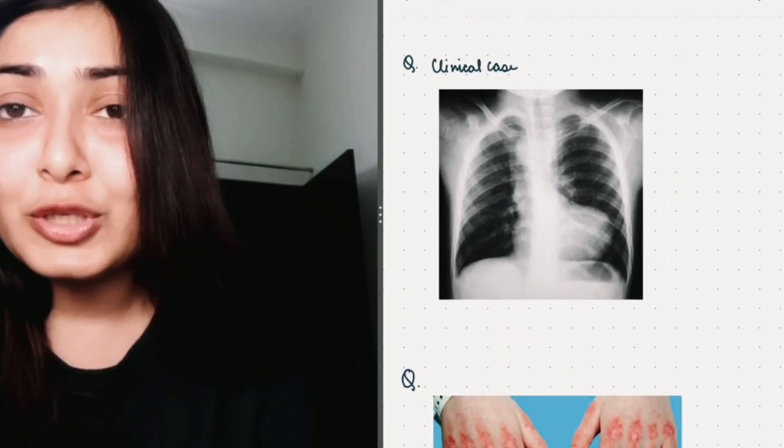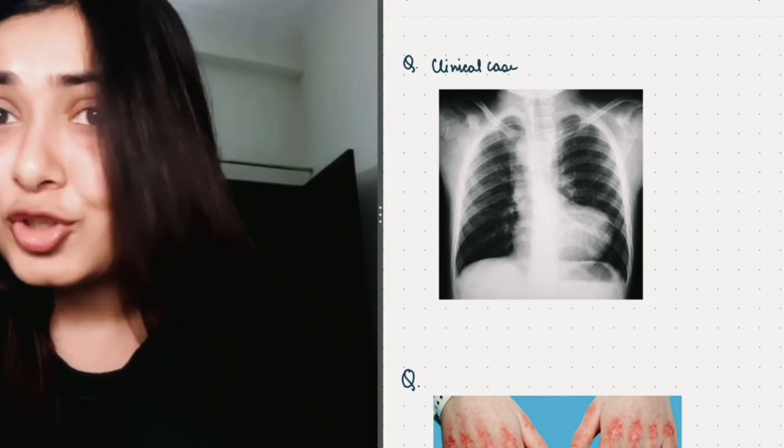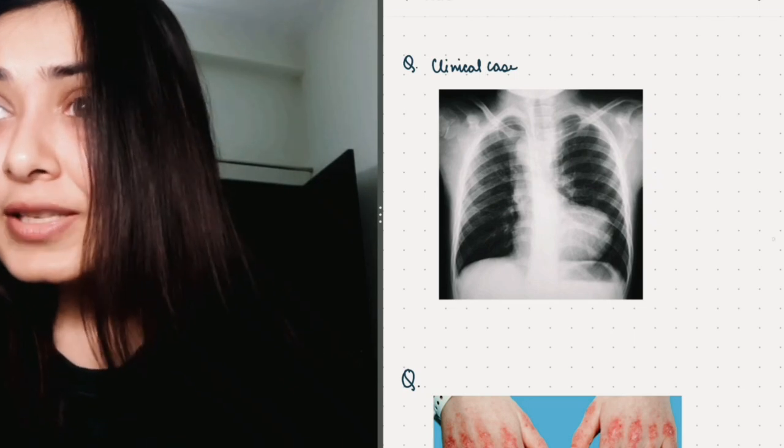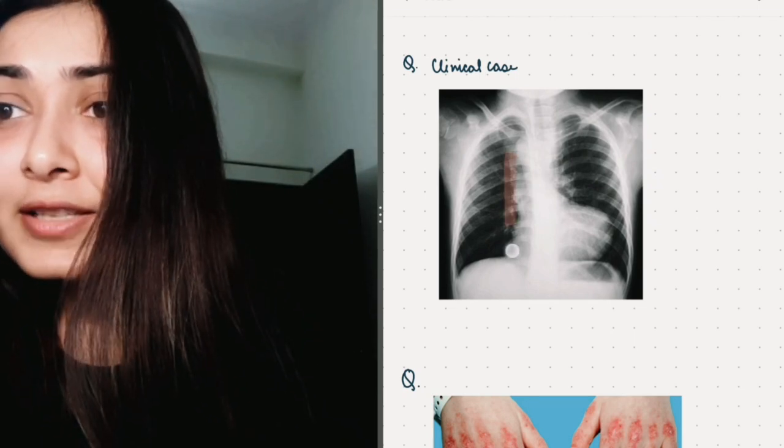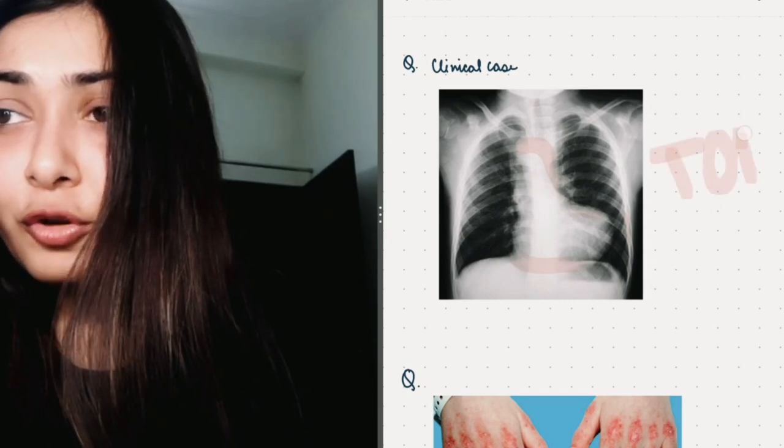Now coming on to the next case, it was again an image based question and a clinical case was given and a picture like this chest x-ray was given. And you can easily appreciate here, it is a classical boot shaped heart and this was TOF, tetralogy of fallot.